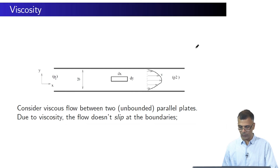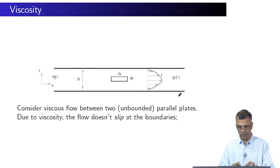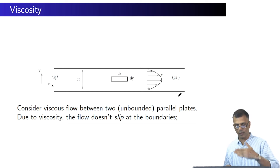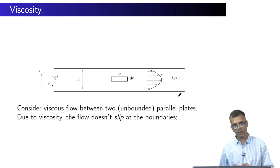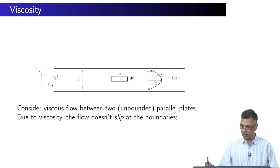Consider viscous flow between two unbounded parallel plates. Unbounded in the following sense: the x-dimension is infinite and the z-dimension, which is into the plane of the screen, is also infinite. Consider a viscous fluid like honey or motor oil flowing in this direction.